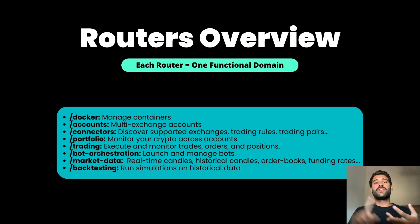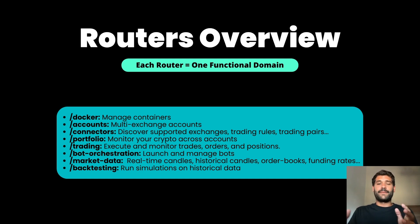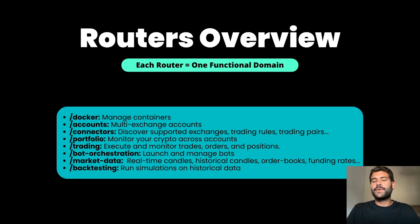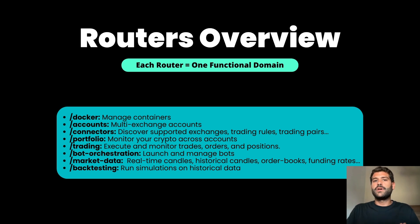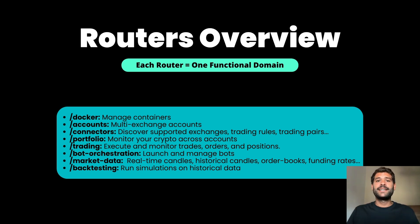Market data is another great router. We support real-time candles, historical candles, order books, and funding rates, and we will improve it over time. The design is really nice because we are caching objects that receive real-time updates and dropping them from memory if they are not requested within a certain amount of time. Soon we'll add that feature to order books and also add a WebSocket feed, because right now the only communication available is via REST.